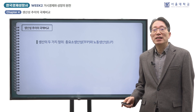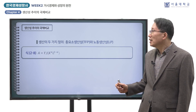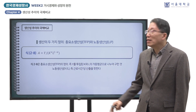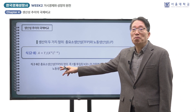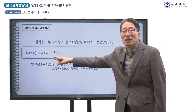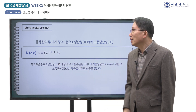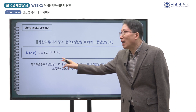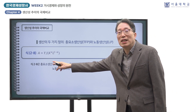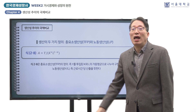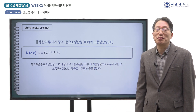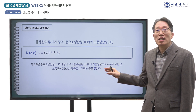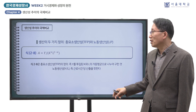TFP는 식 2-8에서 볼 수 있듯이 총산출 Y를 투입된 노동과 자본의 가중평균으로 나누어 산출합니다. 이를 총요소 생산성이라 부르는 것은 자본과 노동을 모두 반영한 총투입 대비 산출로 생산성을 구하기 때문입니다. 이에 대해 노동 생산성은 Y를 노동의 투입 L로 나누어 산출합니다.